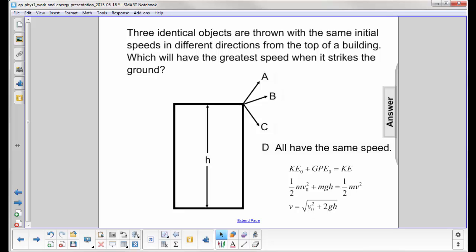And an interesting thing to note here is it does not depend on the mass. We could have thrown three different mass objects, and in any case, since the initial velocity is the same and the height is the same, all three will have the same speed at the bottom.